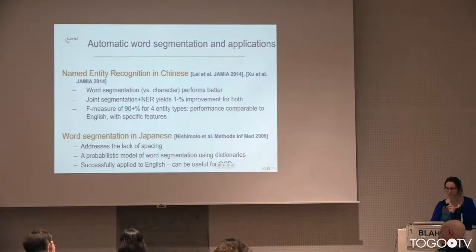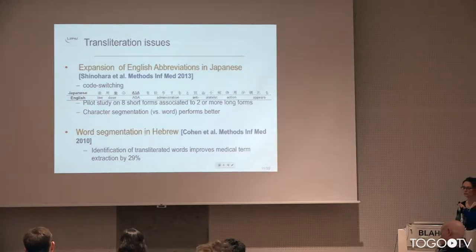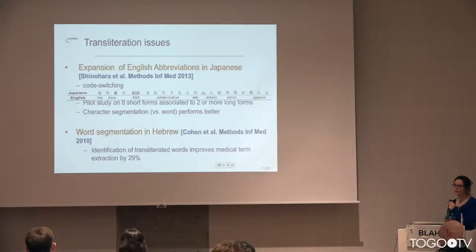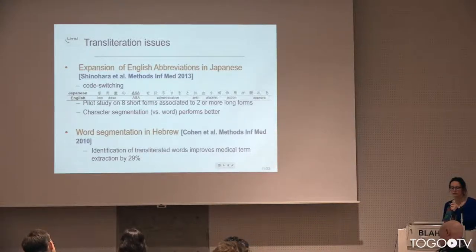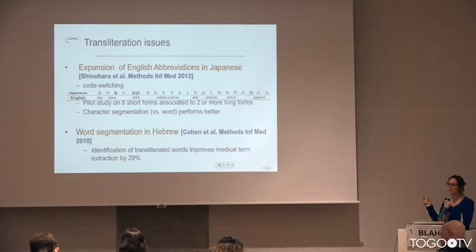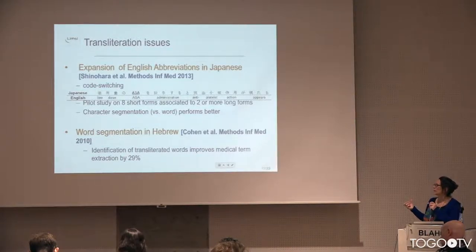An interesting finding from word segmentation experiments in Japanese was that they addressed the lack of spacing between characters. The probabilistic model developed for that could actually be successfully reapplied to English for cases like OCR, where scanned text has spacing that is messed up and needs to be re-engineered. There is also work on abbreviations in Japanese and identification of transliterated words in Hebrew — when English or Latin words are directly used in the native text — akin to code switching.